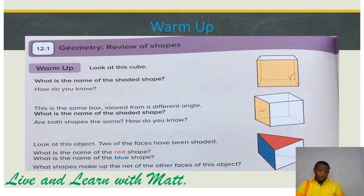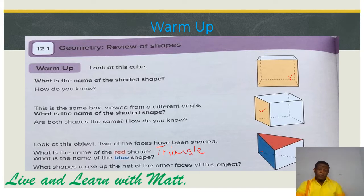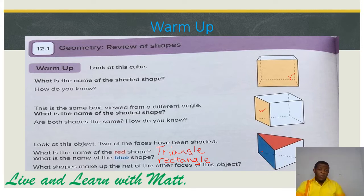Now let's take a look at this object. Two of the faces have been shaded. What is the name of the red shape? It is called triangle. Now what shapes make up the net of the other faces of this object? So we have a triangle here, a rectangle here, a rectangle here, and a square here.